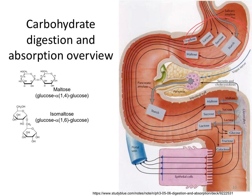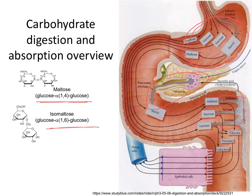Then in the small intestine, pancreatic amylase plays a major role in digesting the starch, hydrolyzing it down to largely disaccharides like maltose and isomaltose. Those disaccharides — along with some trisaccharides — proceed through the small intestine where the brush border enzymes maltase, sucrase, and lactase digest them to the monosaccharides glucose, fructose, and galactose, which can then enter the intestinal enterocytes and the portal vein.